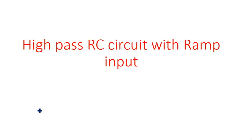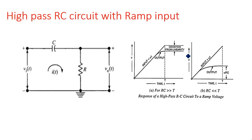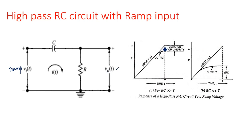In this video, I am going to explain the behavior of a high-pass RC circuit with ramp input. This is another type of input to verify the operation of the high-pass RC circuit — how the capacitor behaves when a ramp input is applied, similar to the low-pass RC circuit. The capacitor is given first and later the resistor, across which we take the output. v_i(t) is the ramp input voltage, i(t) is the current, and v_out(t) is the output voltage across the resistor.